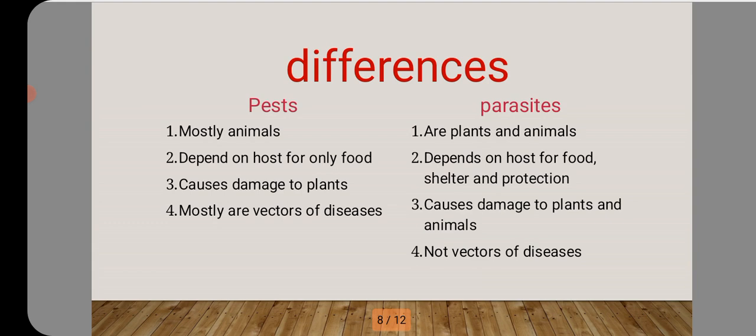Second, pests depend on their hosts for food only — rodents and insects come mainly for food. But parasites depend on their hosts for food, shelter, and protection. Third, pests cause damage to plants only, whereas parasites cause damage to both plants and animals. Fourth, pests are mostly vectors of diseases — organisms that transmit disease from one organism to another — but parasites are not vectors of diseases.